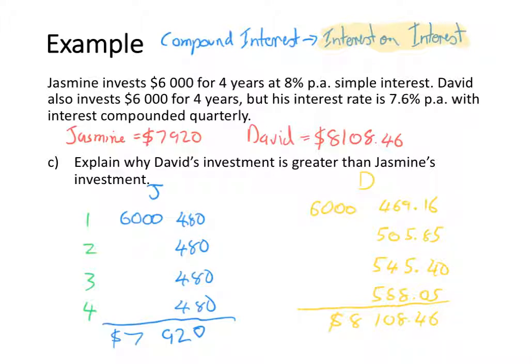So you can see that while Jasmine earns the same amount of interest under simple interest every year, David's interest amount goes up each year because it is compounding and he's earning interest on interest. Even though he had the lower rate, over the four years he ends up earning a greater amount. That is the difference between compound interest and simple interest.